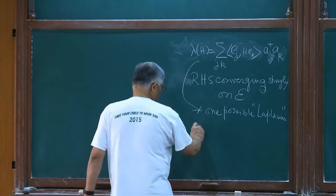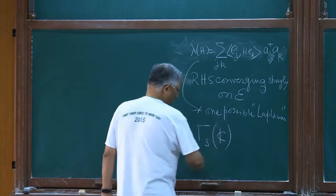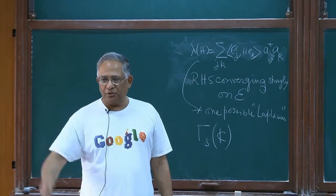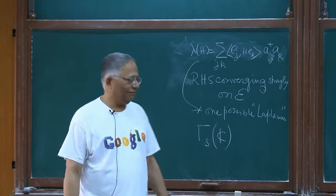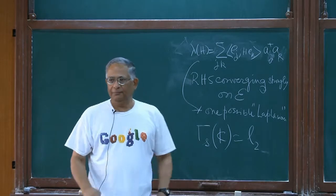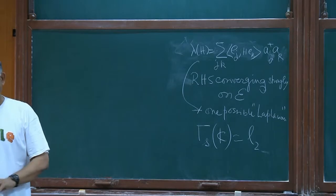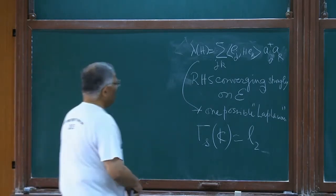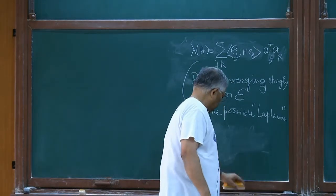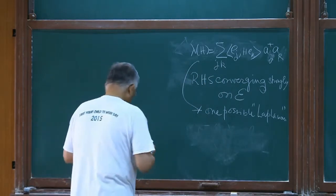The Fock space over C — take the one-dimensional base space; nothing could be simpler. What is the Fock space over it? L². So the base space is one-dimensional, but the Fock space is infinite dimensional already. But here of course I am taking the base space itself to be infinite dimensional. The base space could be small l² itself, for example.